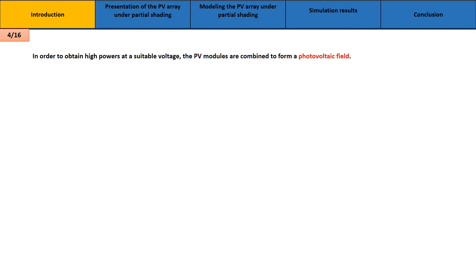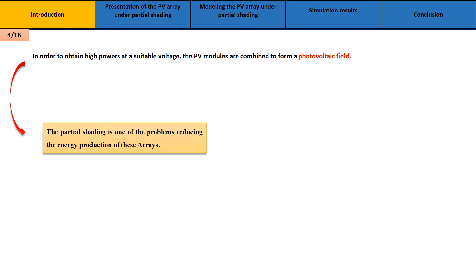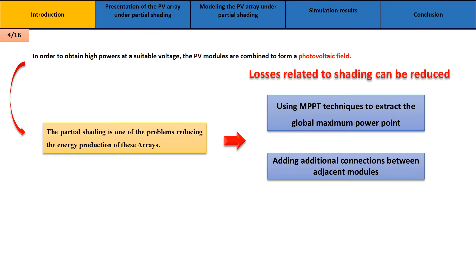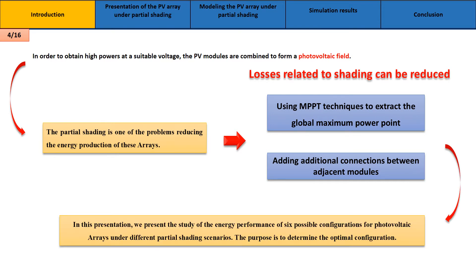In order to obtain high powers at suitable voltage, PV modules are combined to form photovoltaic arrays. However, partial shading is one of the problems reducing the energy production of these arrays. Losses related to shading can be reduced by using MPPT (Maximum Power Point Tracking) techniques to extract the global maximum power point, or by adding additional connections between adjacent modules.